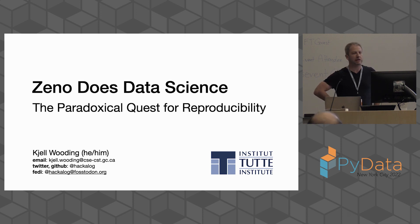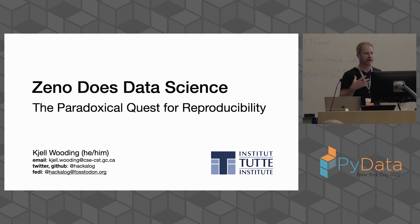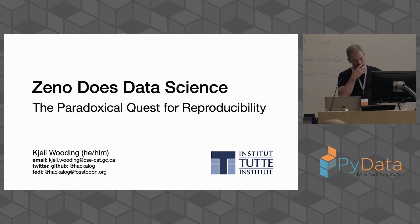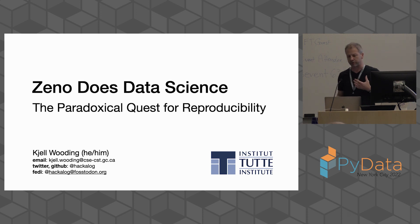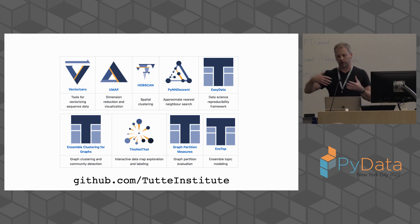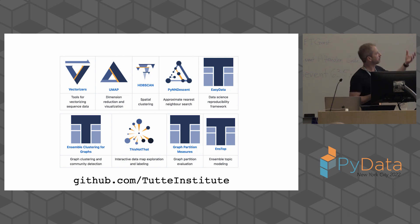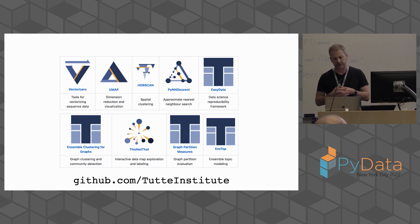The Tutte Institute is a fundamental research institute. We're owned by the Canadian government, and we do research in areas associated with cryptography, data science, and so forth. My area is data science, though I decided I was not going to talk about it today. Our mission is to try and make improvements to fundamental algorithms — things like unsupervised learning, dimensionality reduction, nearest neighbor, and so forth. If you're familiar with UMAP, that was developed by my colleagues at the Tutte Institute.